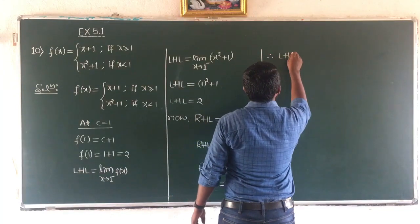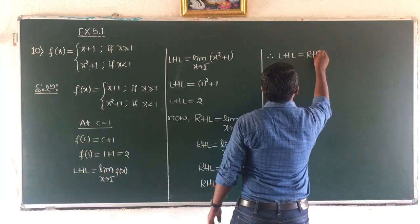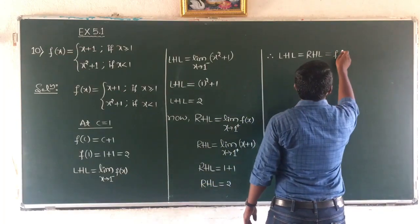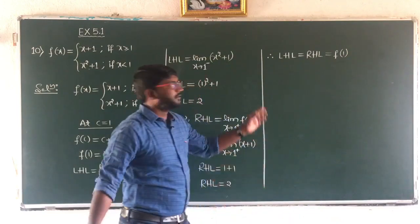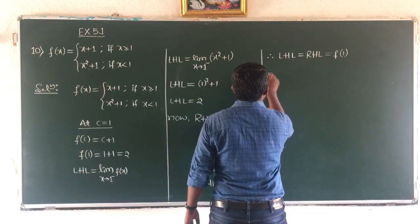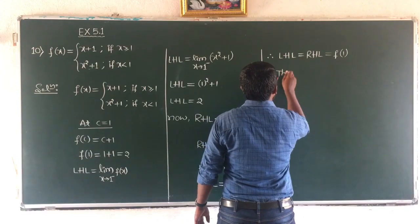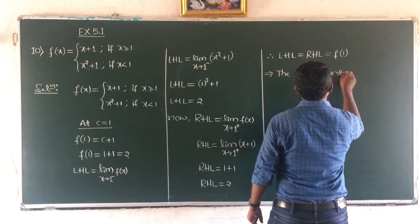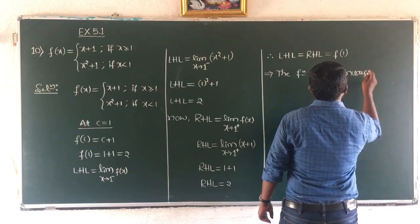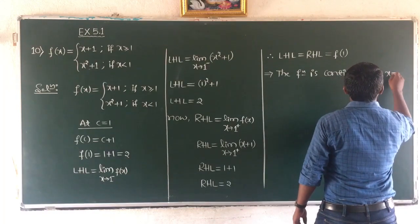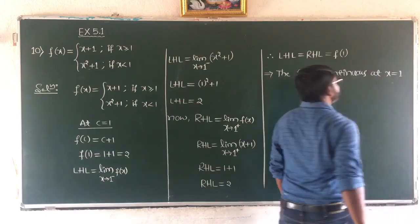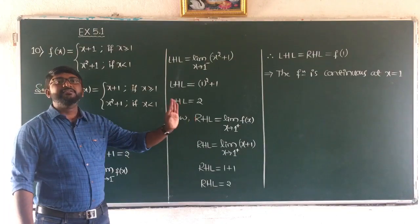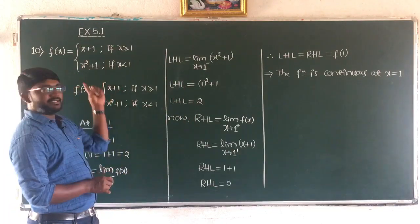LHL equals RHL equals f(1). Therefore the function is continuous at x equal to 1. The function is continuous for c less than 1, c greater than 1, and c equal to 1. That means there is no point of discontinuity for the given function.